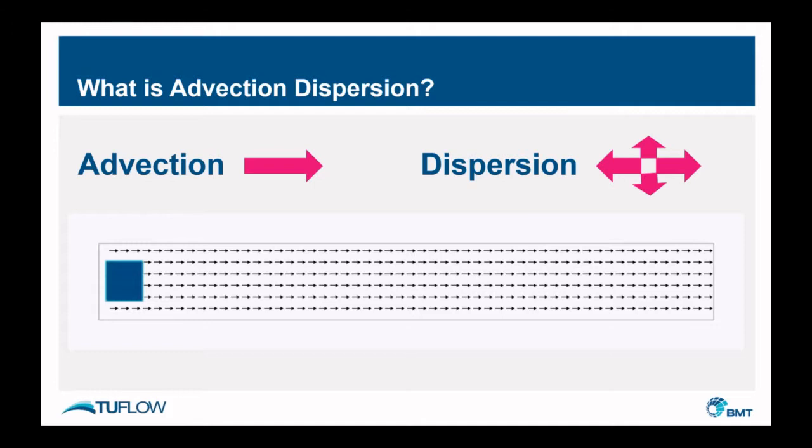Advection is the transport of a substance or quantity by bulk motion. Dispersion is the action of a substance spreading or diffusing within another substance. This is roughly demonstrated by the arrow to the right for advection, and then the arrow in four directions for dispersion, with the strongest forcing in the streamwise direction as opposed to the transverse direction, or up and down in this instance.